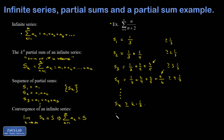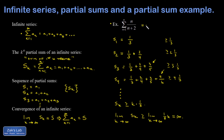In general, the kth partial sum s_k is greater than or equal to k times 1/3. So when I examine the limit as k goes to infinity of s_k — which would equal the sum of this series — that number is greater than or equal to the limit as k goes to infinity of k/3, which unambiguously goes to infinity. Therefore we say the sum equals infinity, or the series diverges.